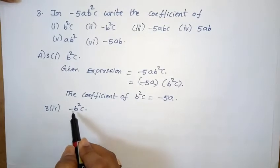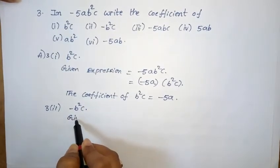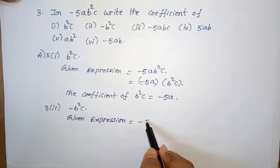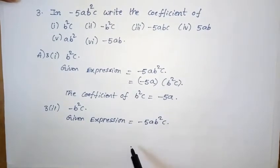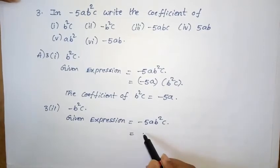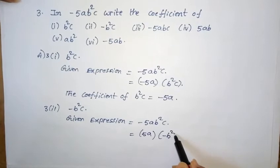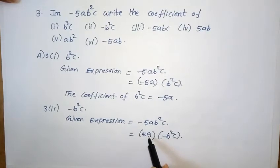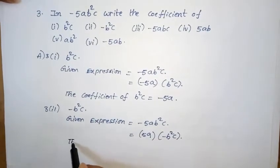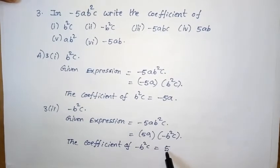Third problem, second one: find the coefficient of minus b²c. Given expression is minus 5ab²c, which can be written as 5a into minus b²c. So the coefficient of minus b²c is equal to 5a.